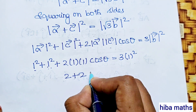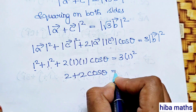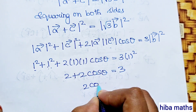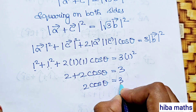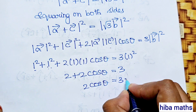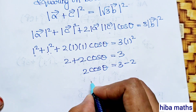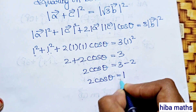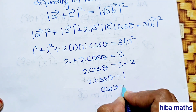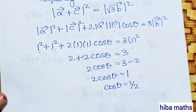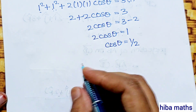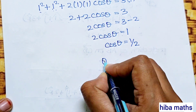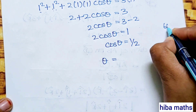So 2·cos θ = 3 - 2 = 1. Therefore cos θ = 1/2. This gives θ = 60°. The angle between vector a and vector c is 60 degrees.